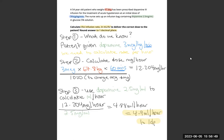Hi guys, welcome back. Another infusion type question. So with this one, we have a dose. We know that dopamine has a concentration of 2.5 milligrams per ml. What we then need to do is calculate the infusion rate in millilitres per hour and we need to give our answer to one decimal place.